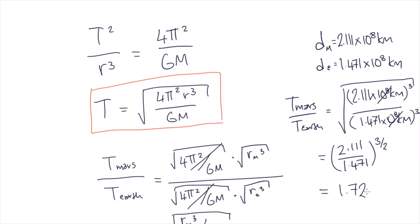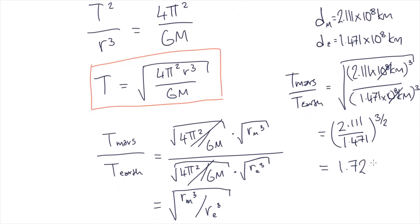Using this method, we've found that the orbital period of Mars is equal to 1.72 times the period of Earth, which is very similar to our previous answer of 1.68.